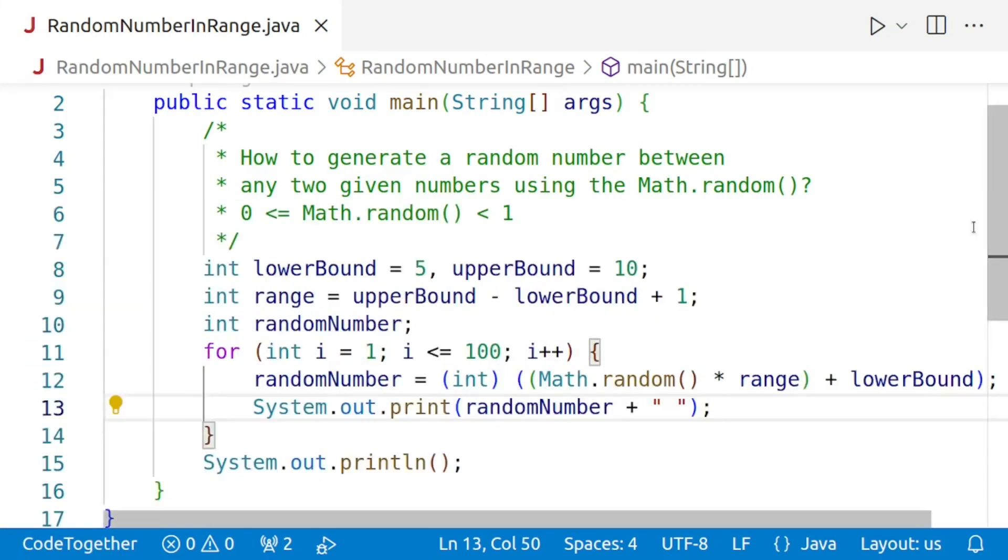In conclusion, generating a random number between any two given numbers using the Math.random method in Java is a simple process. By following the steps we discussed and putting them into practice with the Java code example I provided, you can easily generate random numbers for any range you need. Thank you for joining me in this class and I hope you found this information helpful. See you in the next video. Till then, happy coding.